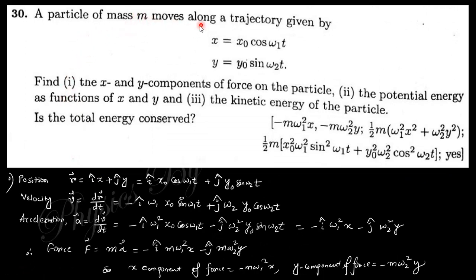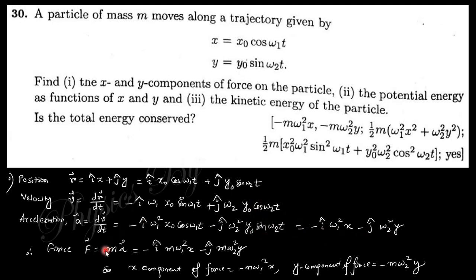The next question says: a particle of mass m moves along a trajectory given by x = x₀*cos(ω₁t) and y = y₀*sin(ω₂t). Find the x and y components of force, and the potential and kinetic energy. The position is r = i*x + j*y. The velocity is dr/dt. The acceleration is dv/dt, giving terms in sin and cos which reduce to expressions in x and y. The force is mass times acceleration, giving the x and y components.